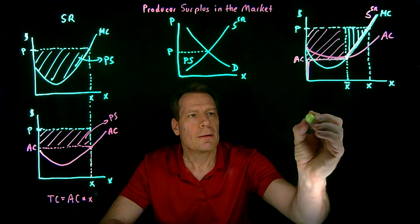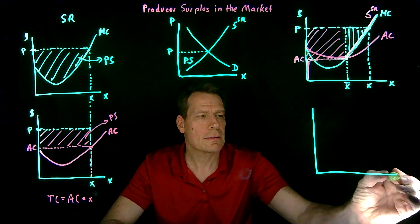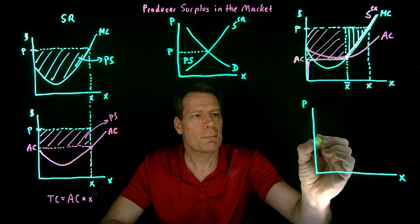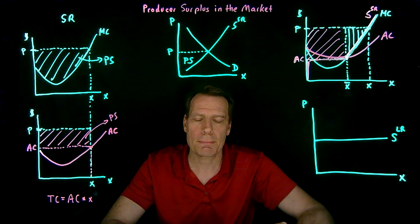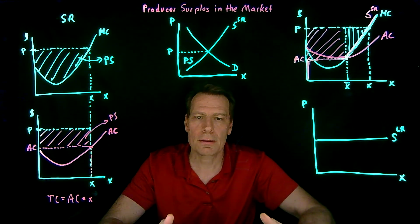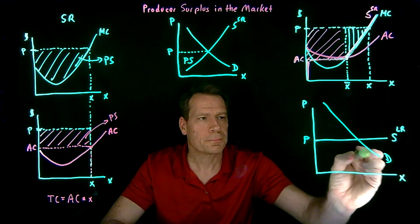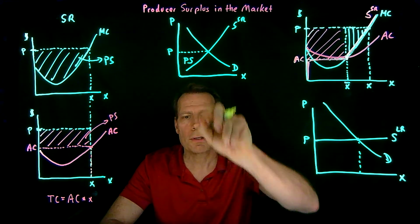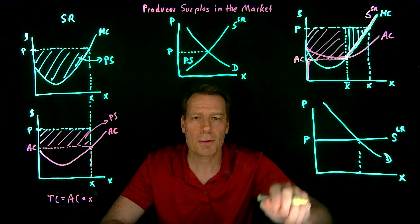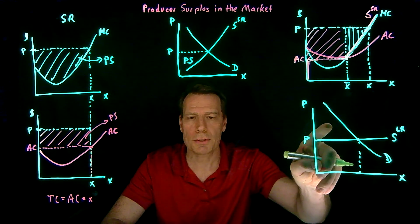Now what about the long run? In the long run, firms make zero profit because price is driven down to the zero profit price. So the long run supply curve is actually flat — perfectly elastic — because firms enter and exit until price is driven down to the zero profit price. With our demand curve, the market produces this quantity, but there's no triangle like there was for producer surplus. That's because long run profit equals zero. So in the long run there is no producer surplus, and all the surplus in the market accrues to just the consumers.